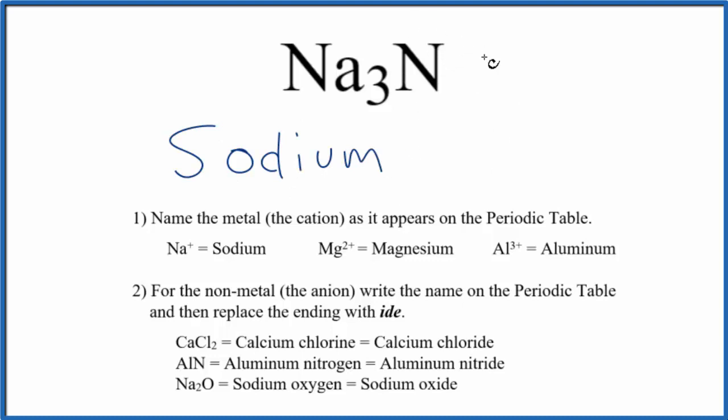Then we write the name for the nitrogen here, the nonmetal, as it appears on the periodic table. We use a small n, though. And we replace the ending with ide. So we're going to get rid of the ending here and just write ide.